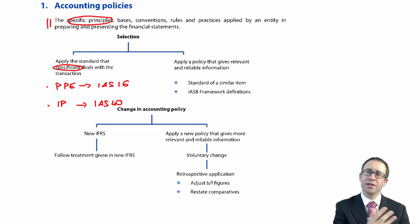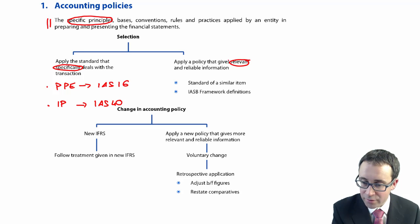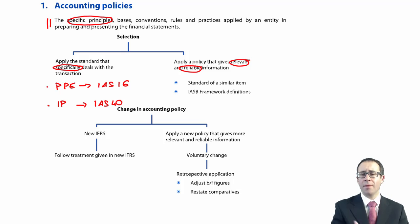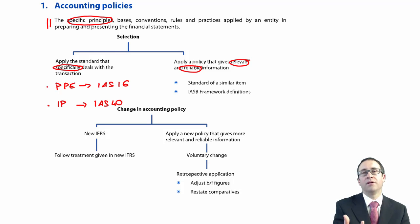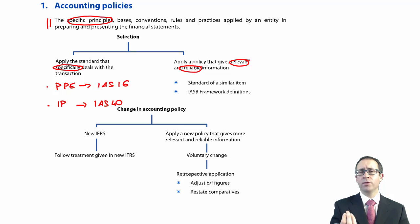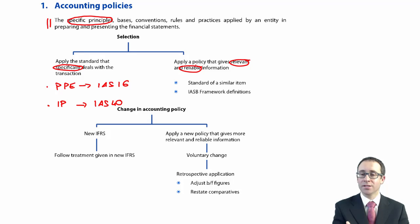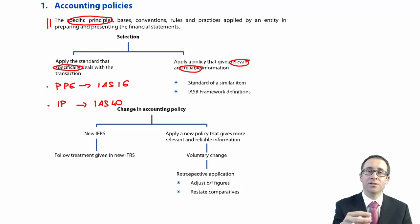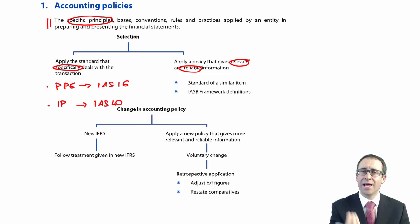If there is no specific standard — which, as we said in the framework chapter, is very, very rare — you should select the policy that gives relevant and reliable information. Remember, we've seen the word 'relevant' in the framework as one of the fundamental qualitative characteristics. And if things are reliable, we focus on substance and economic reality as part of faithful representation. IAS 8 takes the specifics and applies them to the general framework, specifically telling you how to select an accounting policy using framework principles.